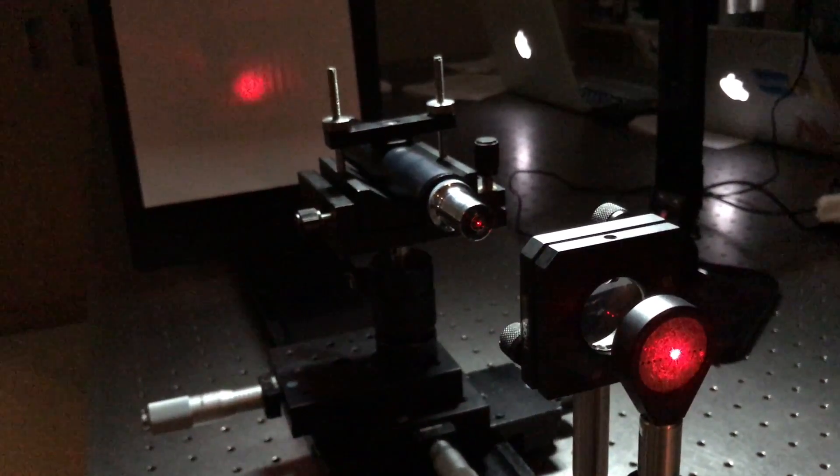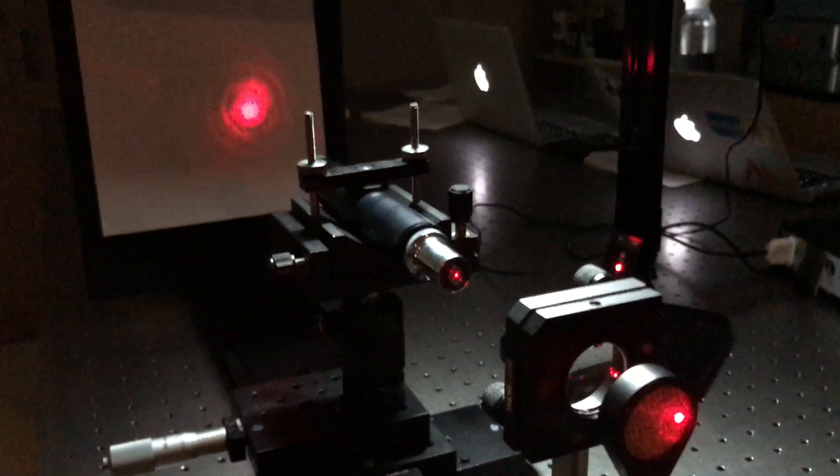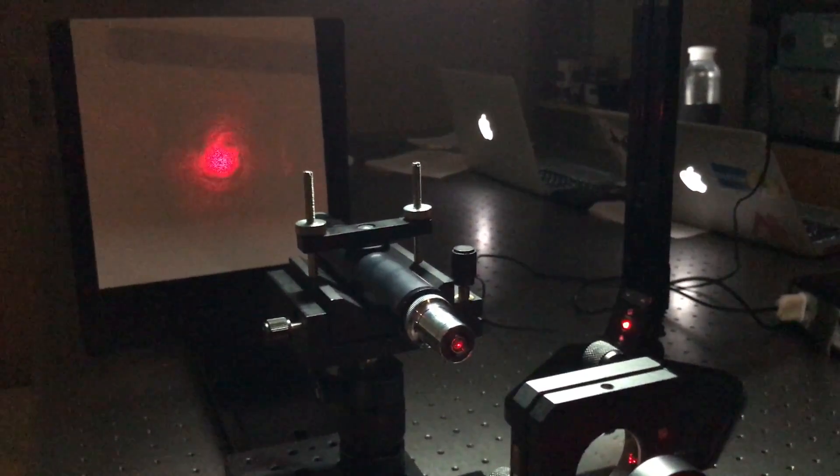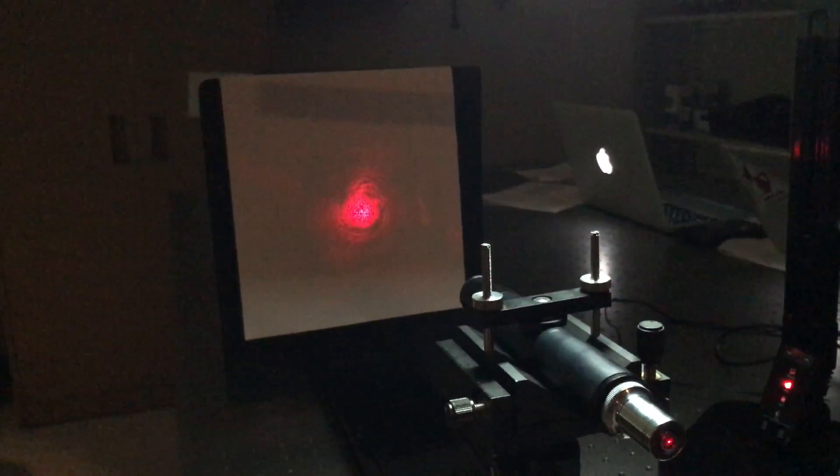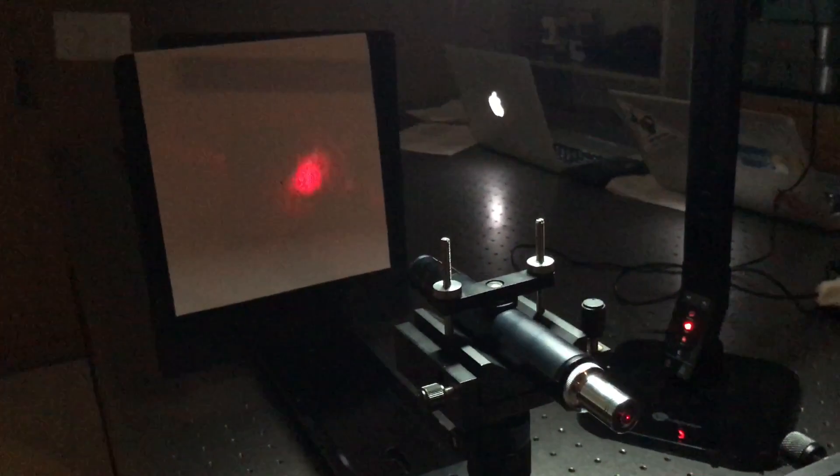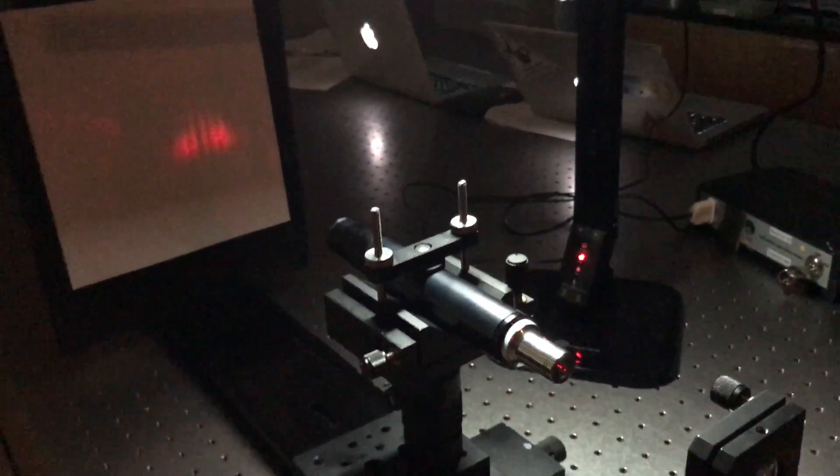We then went to one of the extremes of the pupil positions so that we could find the marginal focus. We did this by moving the microscope axially until it was back in the center of the crosshairs.